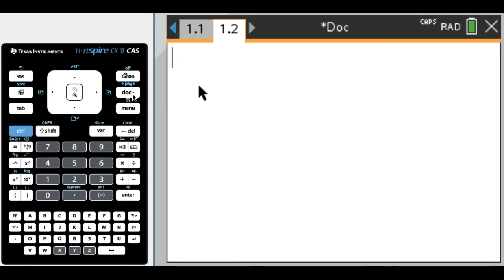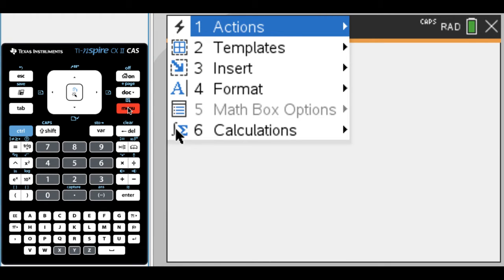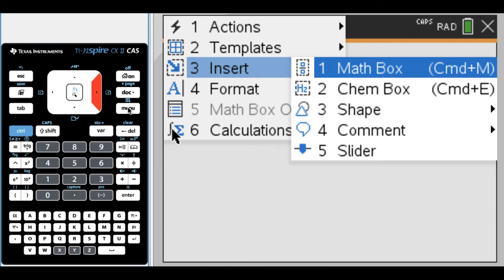So what I want to do is first I need to store a value, but I want to store it in a way that it can actually update when I change things. So to do that in a notes page, what you want to do is insert a math box. For me, I can use a shortcut, Command-M.